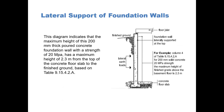In this diagram, it indicates the maximum height of this 200 millimeter thick poured concrete foundation wall, with a strength of 20 MPa, has a maximum height of 2.3 meters from the top of the concrete floor slab to the finished ground, based on Table 915-42-A.